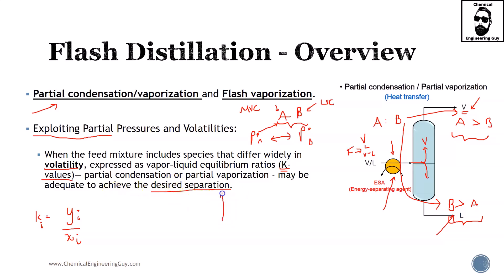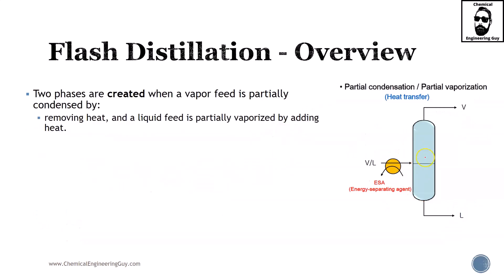So technically speaking we are saying this part right here, but the actual separation occurs when you send this mixture inside this drum. Two phases will be created when the vapor feed is partially condensed. In this example we are having a feed which is pure vapor, then you add a chiller, and then you get a mixture of vapor-liquid. The removal of this heat will force liquid formation of course because we are condensing it.